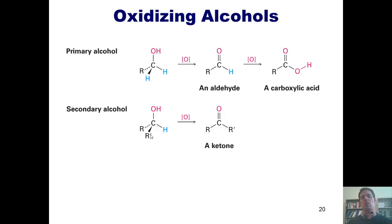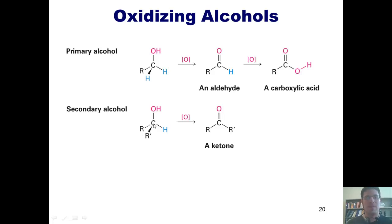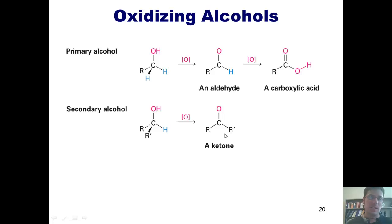And if it's stuck to zero carbons, then it's just a methyl alcohol. So if I have a secondary alcohol, you can imagine this carbon gaining a bond to oxygen to form this type of product right here. Has this substance been oxidized or reduced? Well, you'll notice it's gained a bond to oxygen. Thus, it has been oxidized, and this is an oxidation process. This type of product is called a ketone.